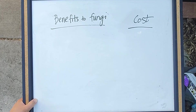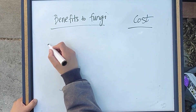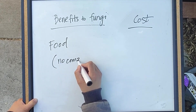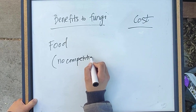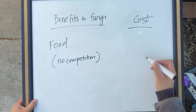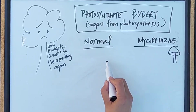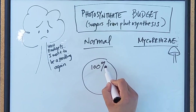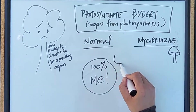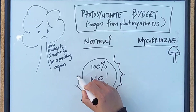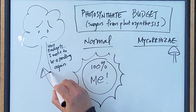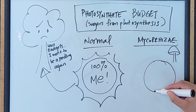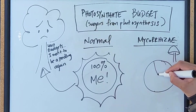What the fungus gets in exchange is food in the form of carbohydrates like sugars. This is helpful for the fungus because it no longer needs to compete with other organisms in the soil for organic matter — it gets it directly from the source. So if this is so great, why wouldn't a plant just form this relationship with any mycorrhizal fungus? The reason is that it's very expensive. If you think about all the sugars and carbohydrates a tree makes through photosynthesis, it will need to give up up to 30% of that to establish one of these relationships.